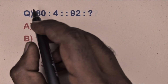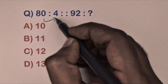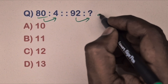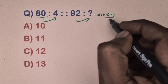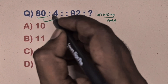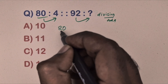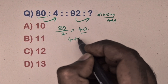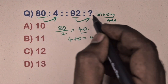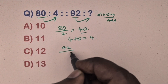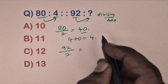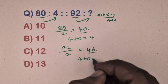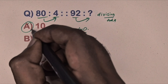Next question: 80 is related to four, 92 is related to which number. This is division and addition. Take 80, divide by two equals 40, add digits to get four. Same way, take 92, divide by two equals 46, add digits: four plus six equals ten. Option A is the correct answer.